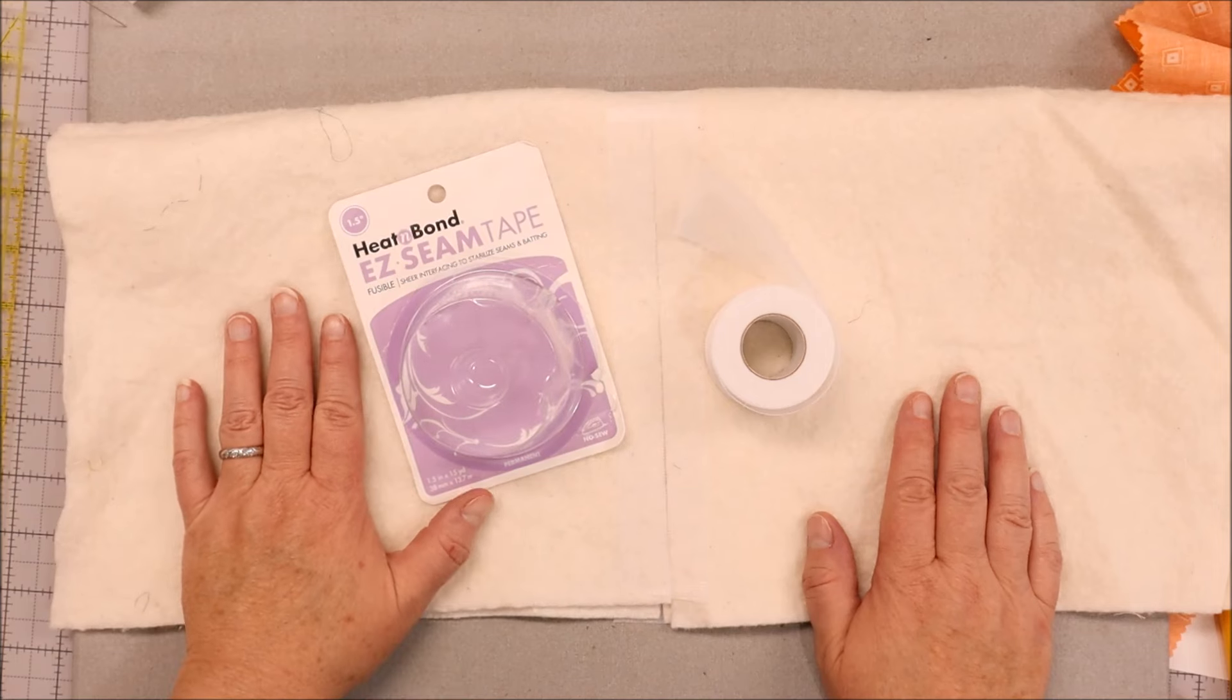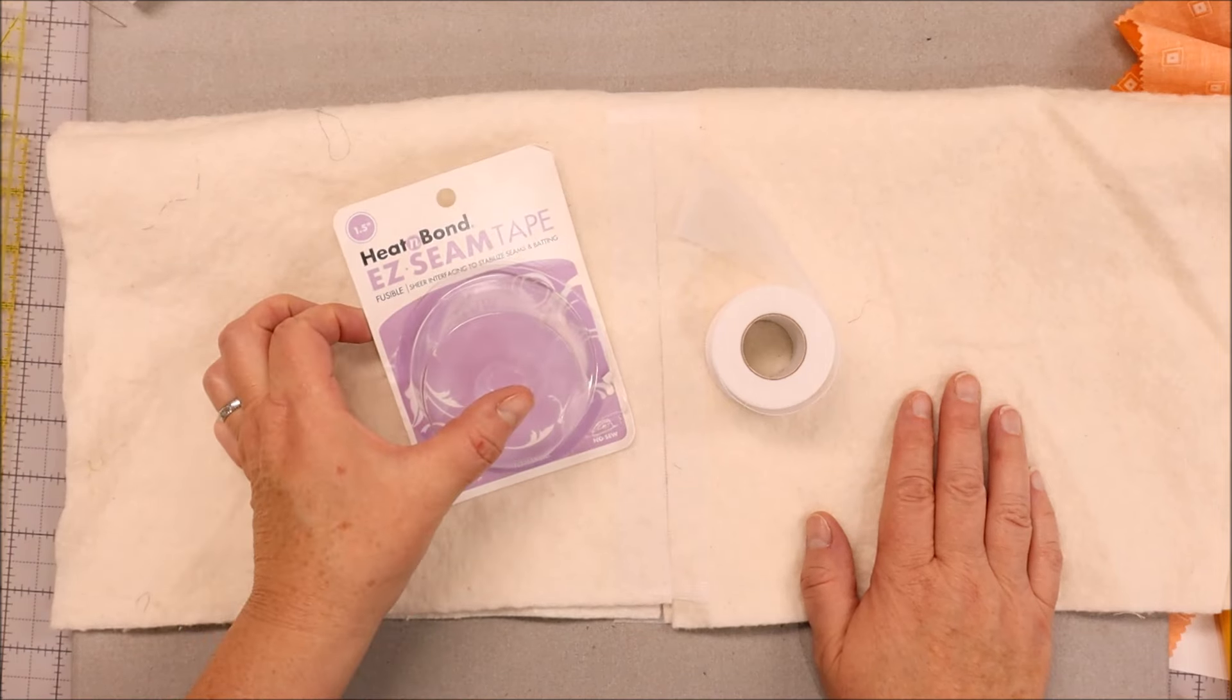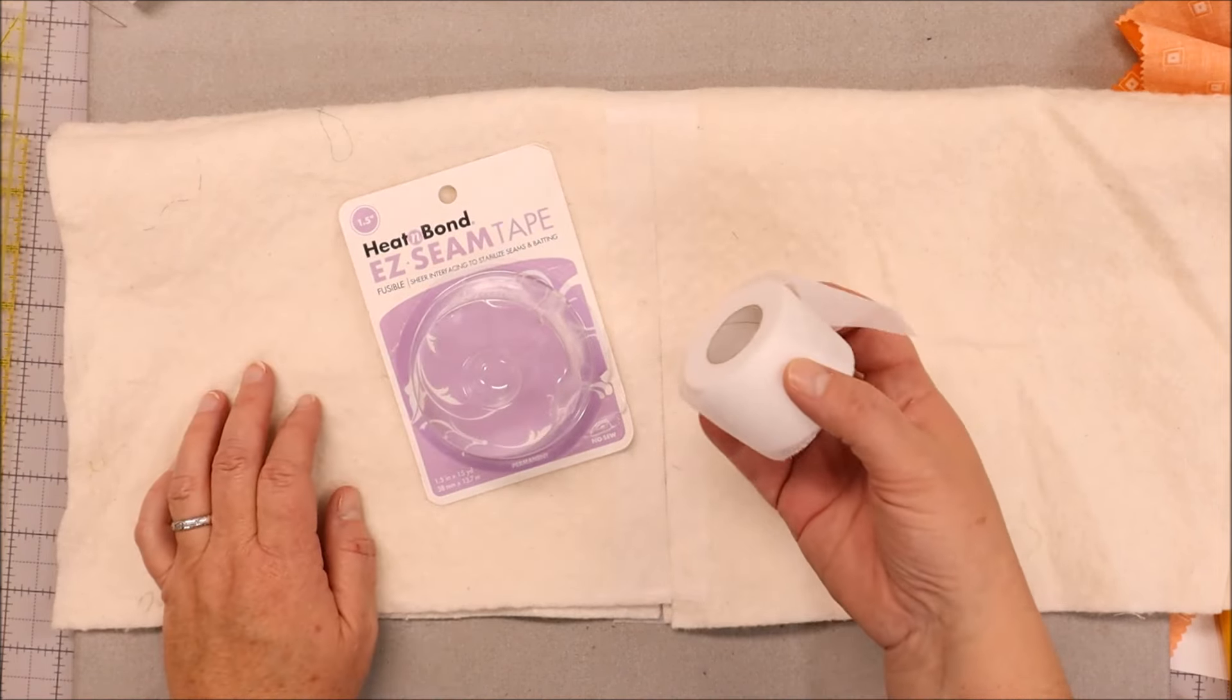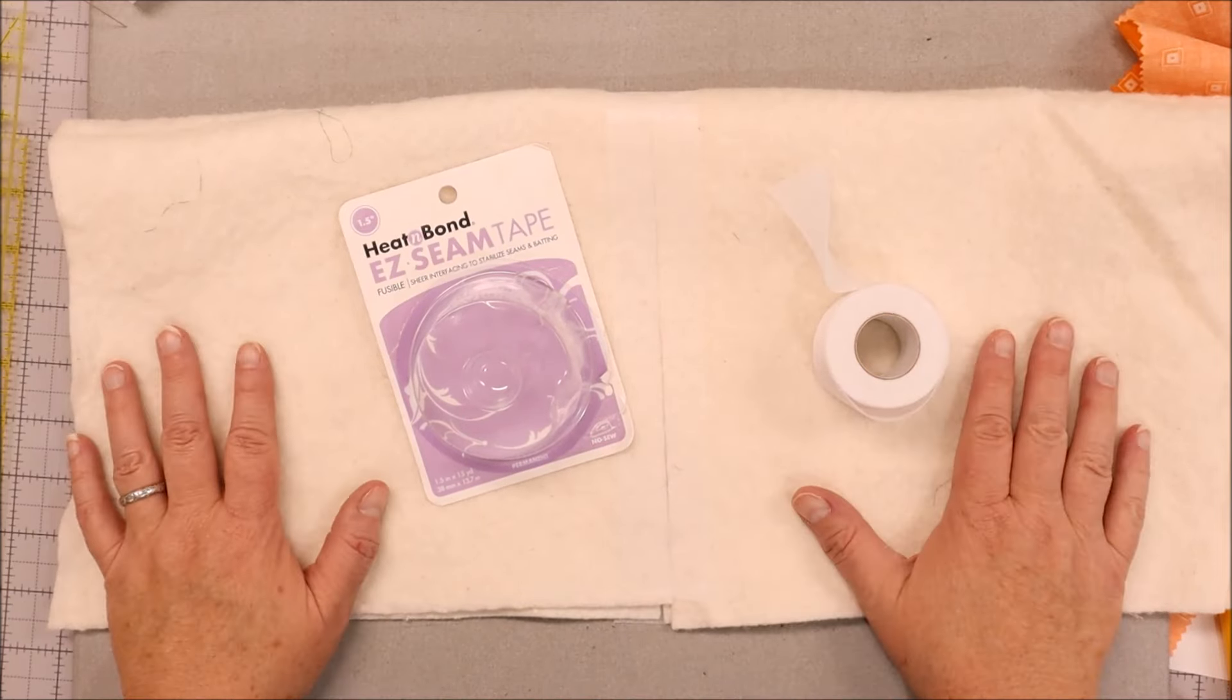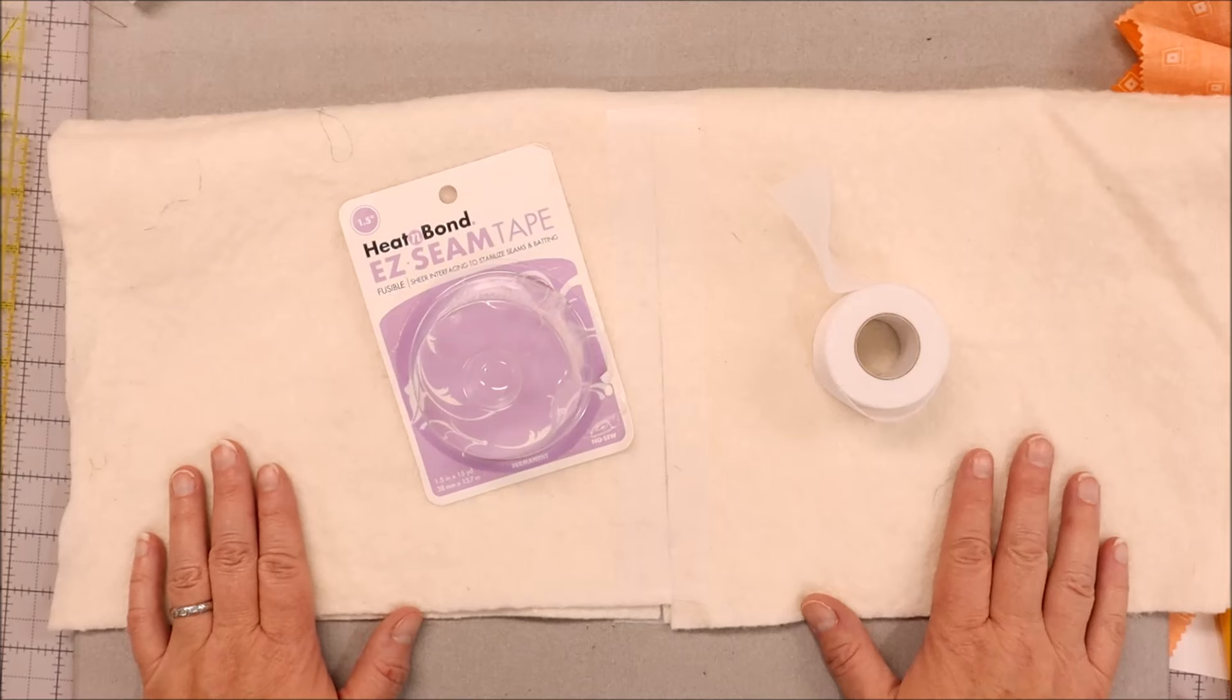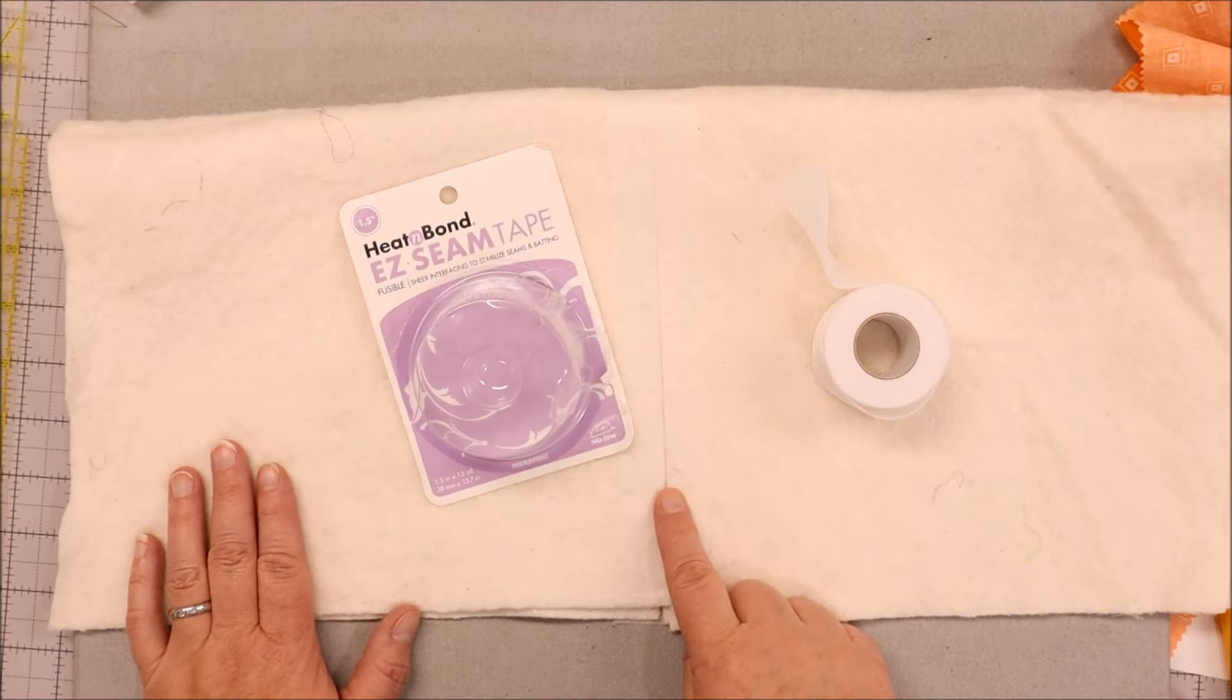This is what the side with the easy seam tape looks like. It's just really super thin mesh right on top of the batting. And this is what the batting looks like on the other side. So as you can see, I've got a little gap, but I'm not too worried about it. So I can use this for quilting, for projects or anything else.